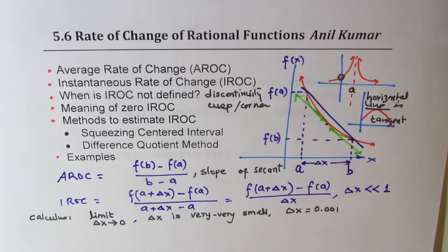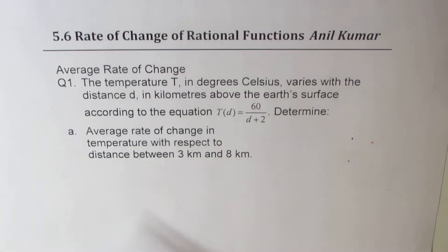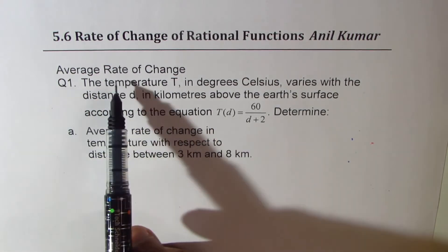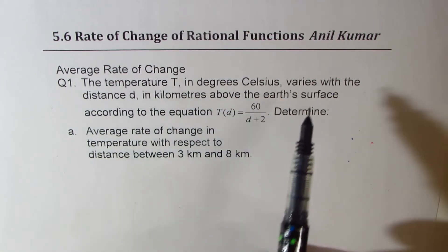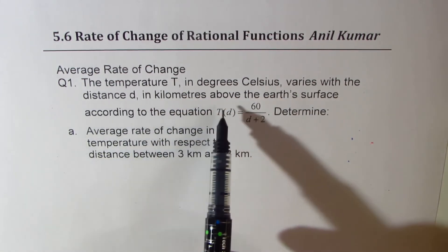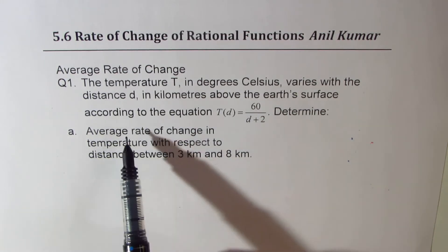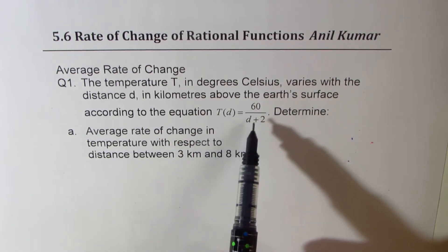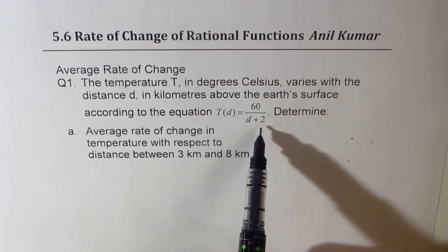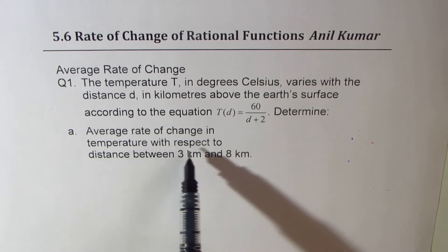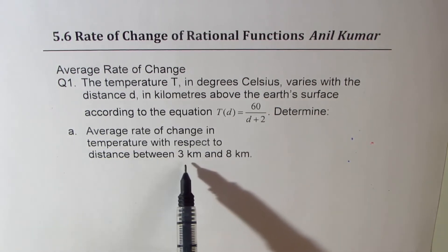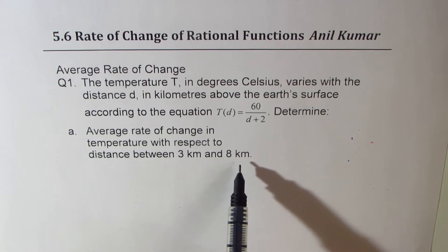Now let's take up our examples. I'll share some test questions to help you get good marks. The first question is based on average rate of change: the temperature T in degrees Celsius varies with the distance d in kilometers above Earth's surface according to the equation T(d) equals 60 divided by d plus 2. Determine the average rate of change in temperature with respect to distance between 3 kilometers and 8 kilometers.